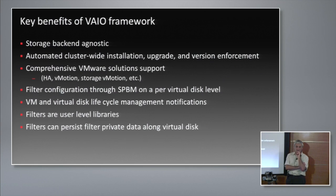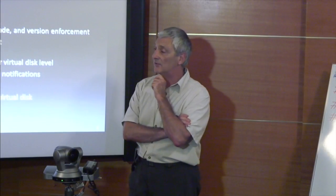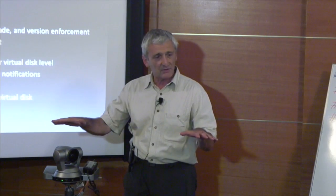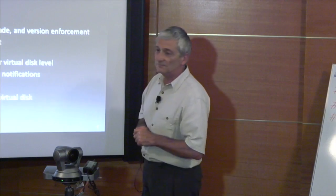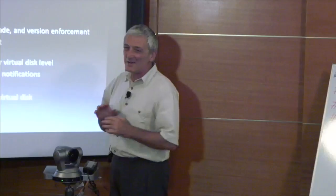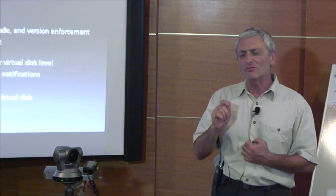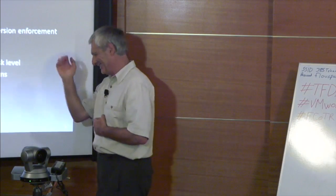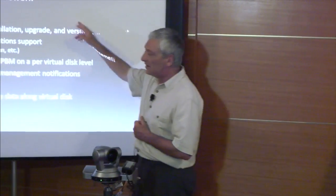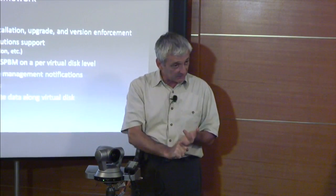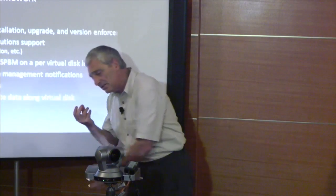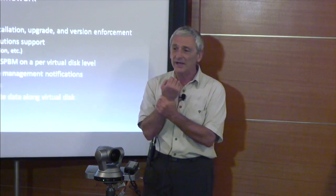For example, in version 5.5 we had a PSA filter-level implementation for our caching, but it works only for SAN — it doesn't work for NFS and doesn't work for VVol. With VIO, whether it's a VVol, NFS storage, SAN VMFS, or even VSAN, we don't care. If the underlying storage can deliver a virtual disk, everything works. Please treat virtual volume as a protocol.